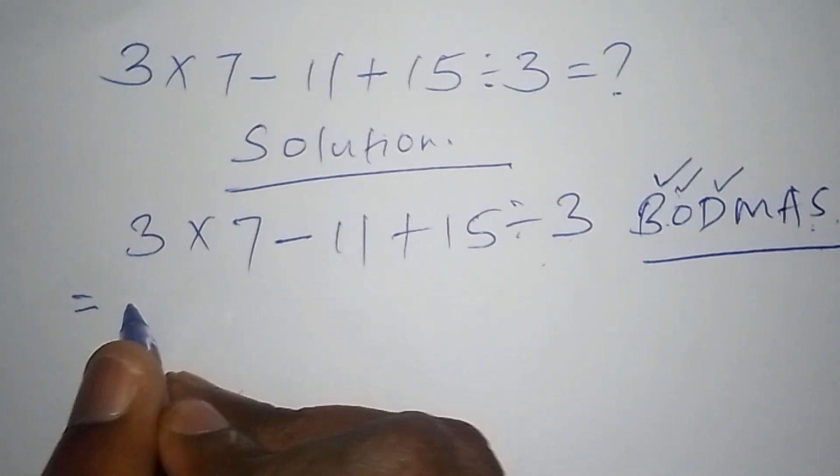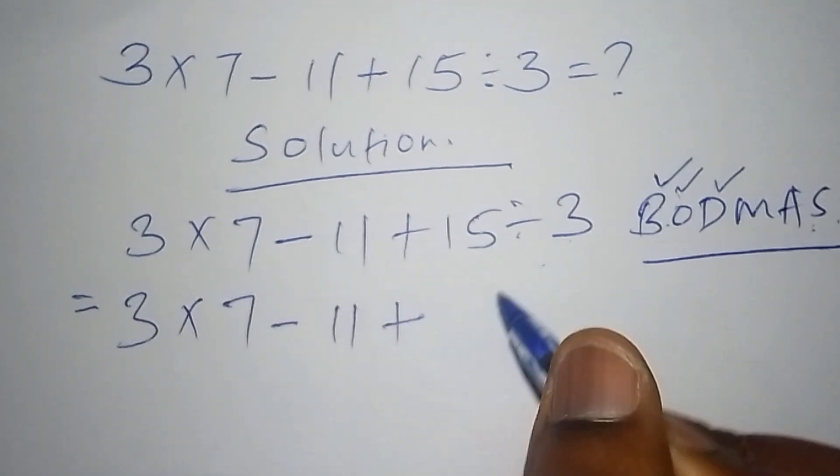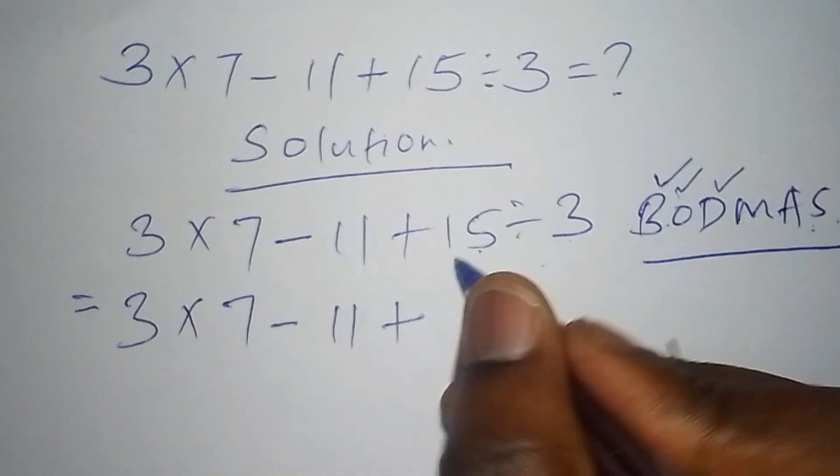We have 3 multiplied by 7 minus 11 plus, now we shall have to work out 15 divided by 3 and that is 5.